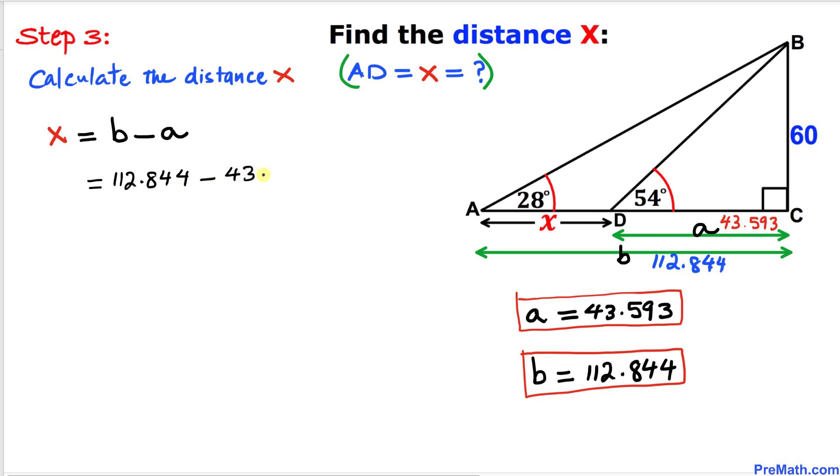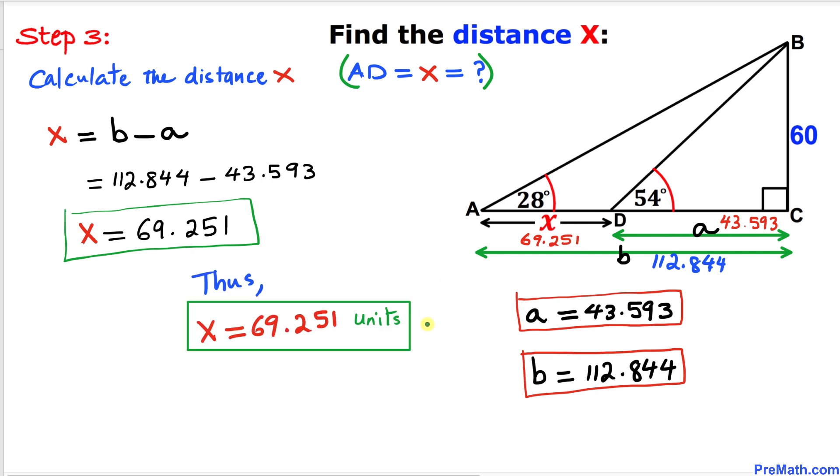We know our b value is 112.844 units minus a value, which is 43.593. Let's subtract. We get 69.251, and that is our X value. Thus, this distance X turns out to be 69.251 units. Thanks for watching, and please don't forget to subscribe to my channel for more exciting videos.